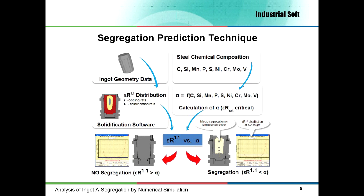So we have two situations. In the first case, if the solidification rate is bigger than the critical value alpha, as seen in the bottom left side example, we do not have segregation. In the second one, if the solidification rate is lower than the critical value alpha, we will have A-segregation and its intensity depends on the difference between the solidification rate and the critical value alpha.